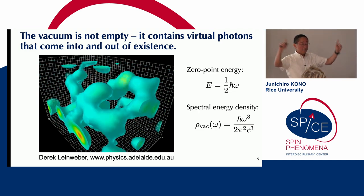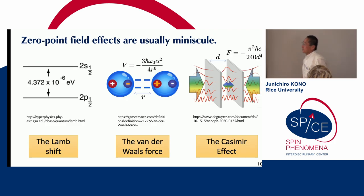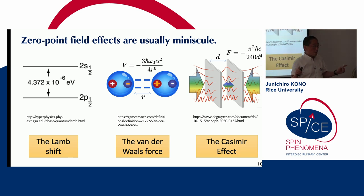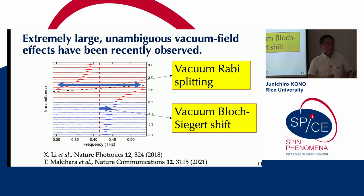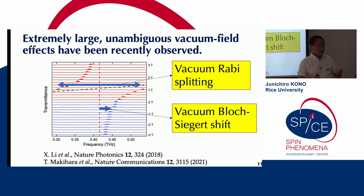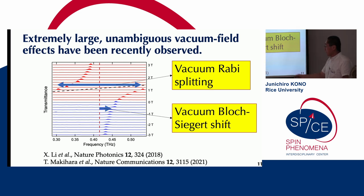The quantum vacuum has infinite energy if you integrate over frequency. On the other hand, the effects of such zero-point electromagnetic fields, quantum fluctuation fields, are usually very, very small — think about the Lamb shift, the van der Waals force, and the Casimir effect. But recently, people in the condensed matter community have been observing extremely strong and unambiguous vacuum field effects in solid-state materials inside cavities, including huge vacuum Rabi splittings on the order of or even larger than the bare cavity frequency, and the vacuum Bloch-Siegert shift, which indicates the breakdown of the rotating wave approximation and exceeds the linewidth.